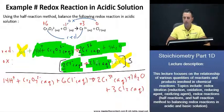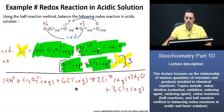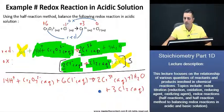We are finished. It's always good practice, once you're done, to go back and check that your atoms and charge are balanced. Here, 14 minus 2 gives plus 12, and then minus 6 gives plus 6 on the reactant side, and plus 6 on the product side. Charges and atoms are balanced — we're good. Let's now move to our next slide.